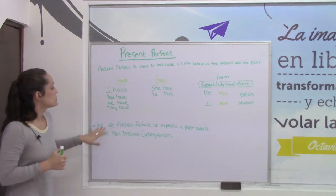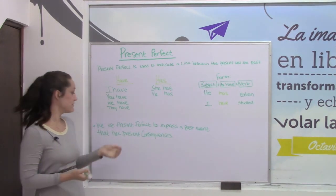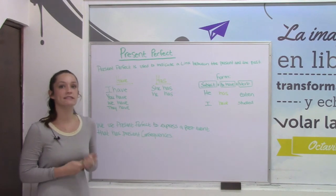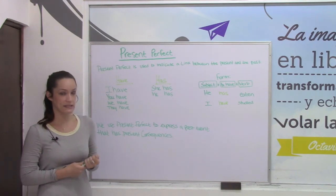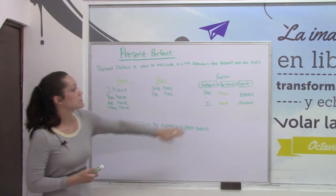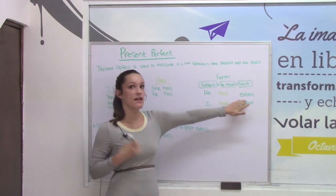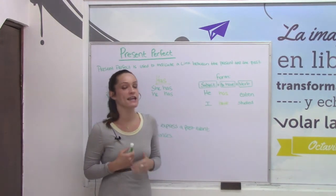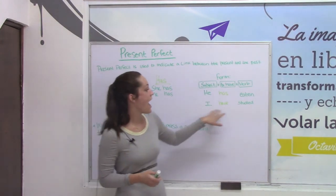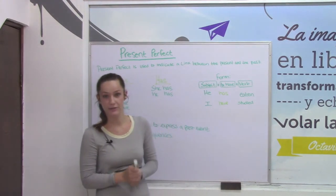We use present perfect to express a past event that has present consequences. For example: he has eaten, therefore he is full. I have studied, therefore I am prepared.